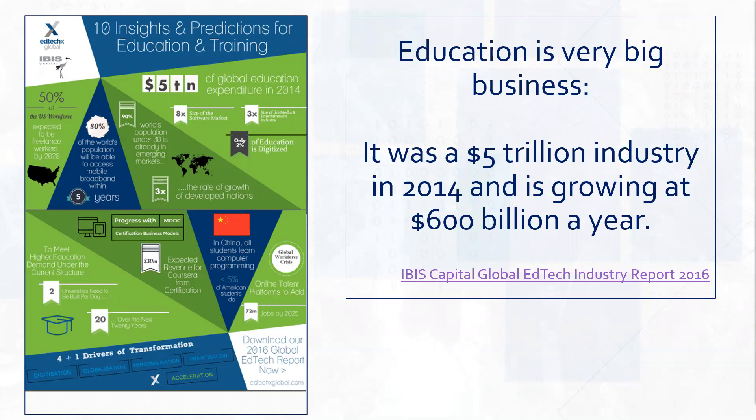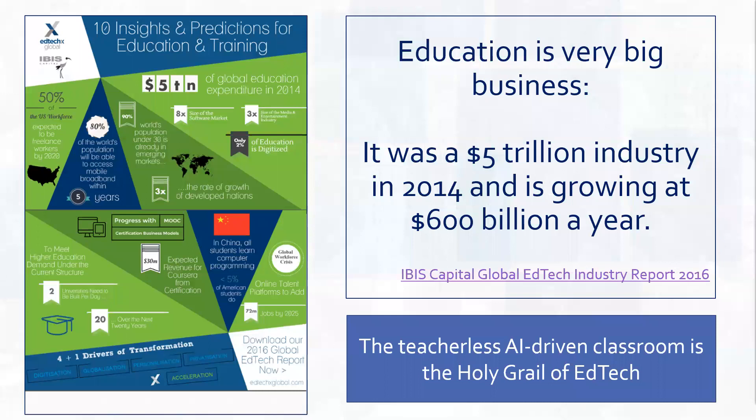There's a lot of investment going in at the moment into AI systems because people are looking to solve that problem. At the moment only 5% of that market is automated - compared to other industries education is way behind. Investment in education is focused around finding cheaper ways to extend the number of people in education - remember there are 263 million children who aren't - and also making it cheaper for governments and parents, so money is going to be a big driver.